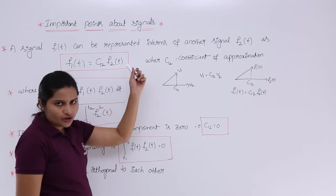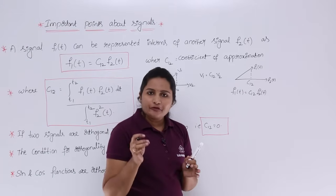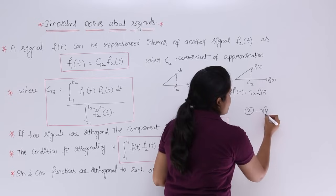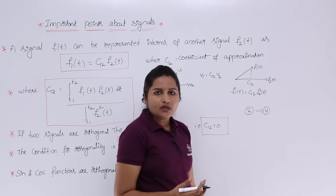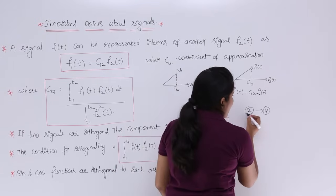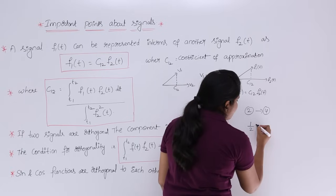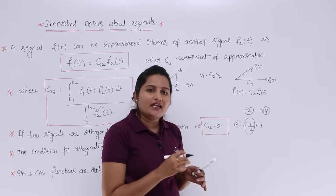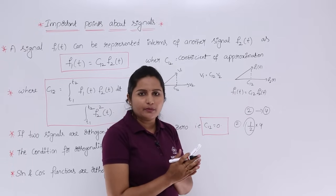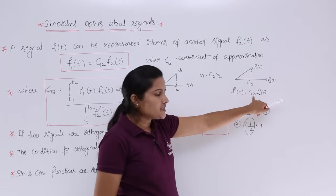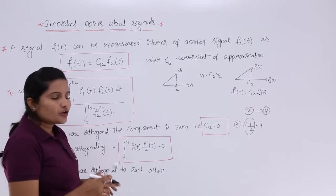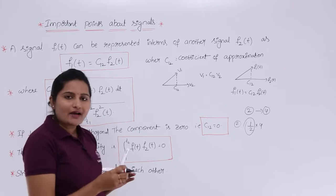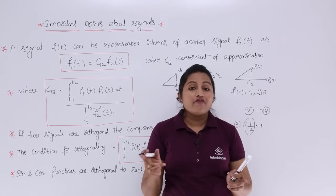This is similar to representing 2 in terms of 4: you need a coefficient — (1/2) × 4 = 2, so 1/2 is the coefficient. To equate anything with any other thing you need a multiplication coefficient. For signals this is called the coefficient of approximation. We have a formula to calculate this coefficient of approximation when two signals are given.